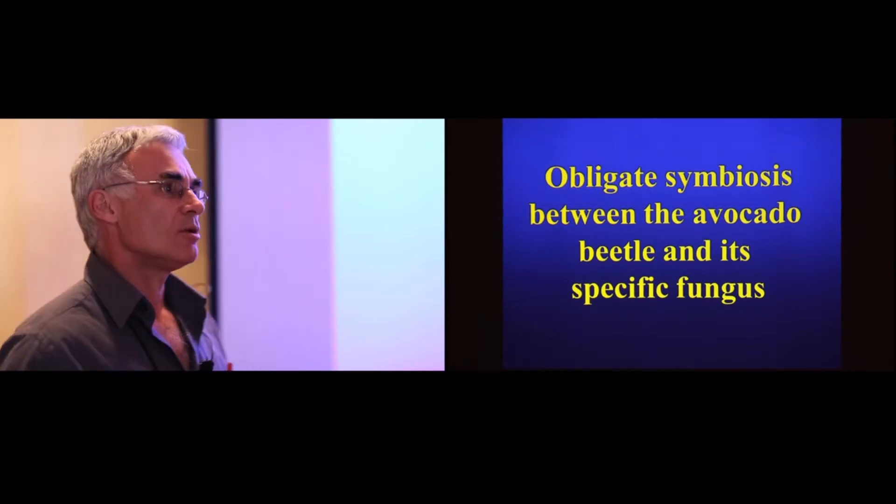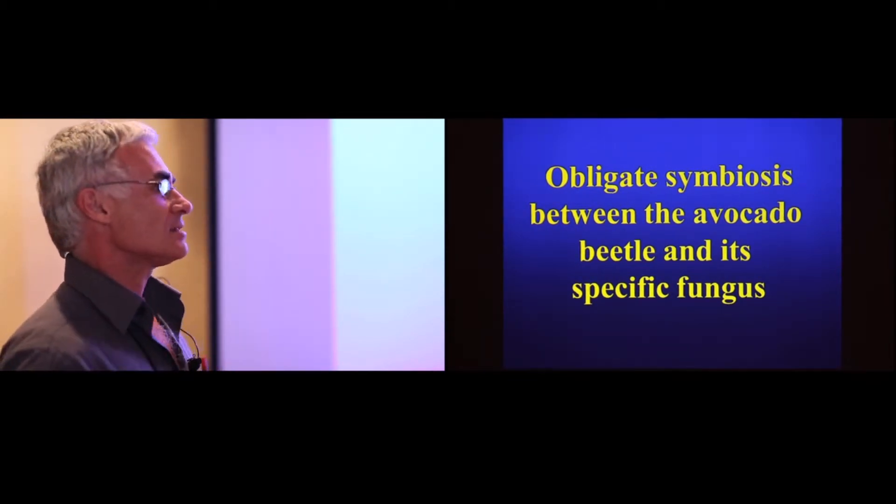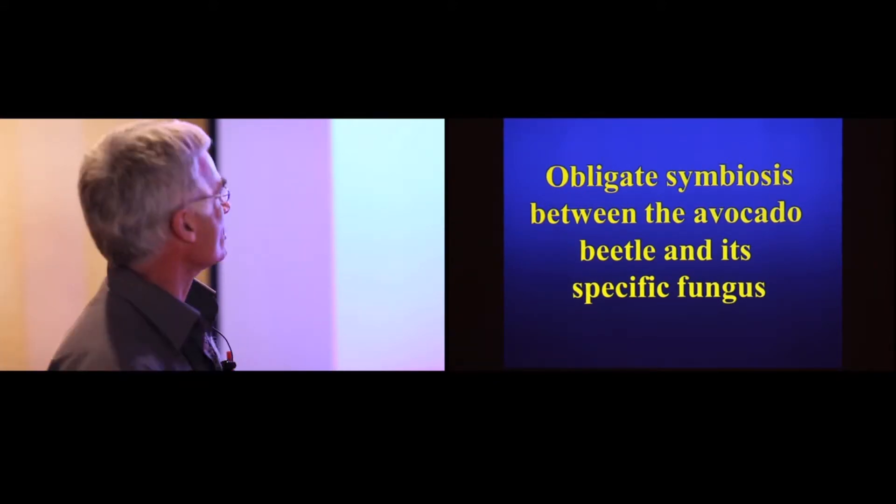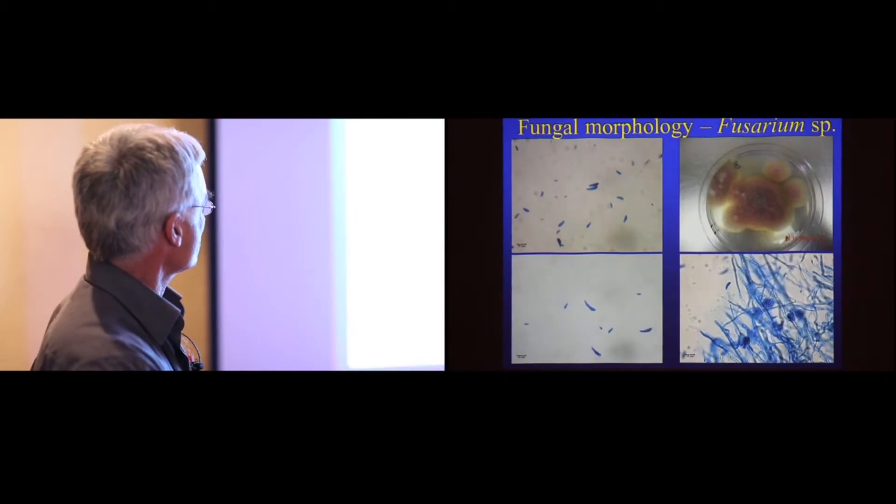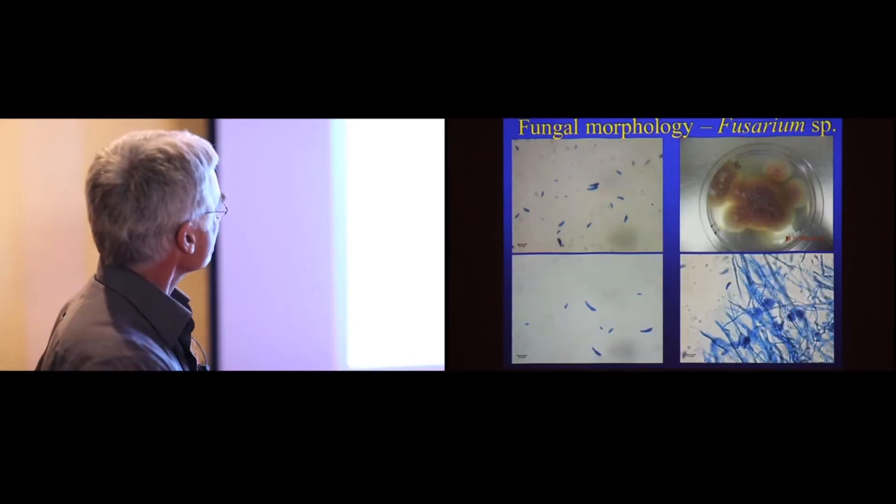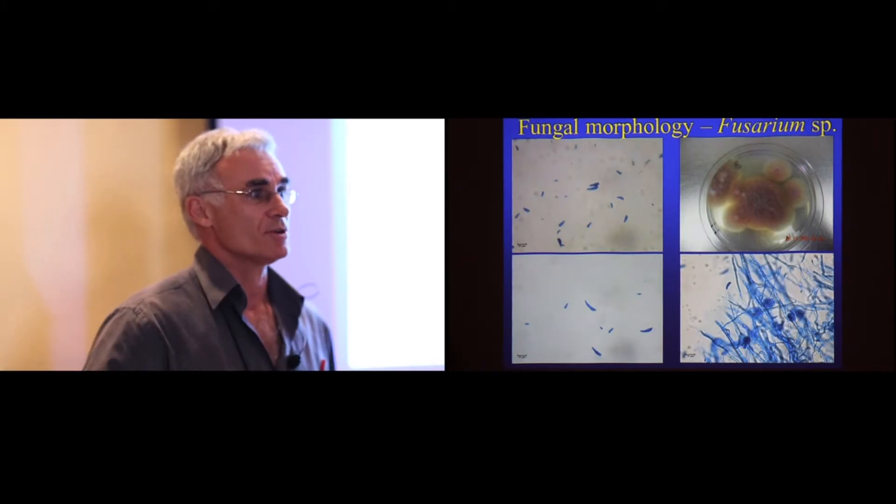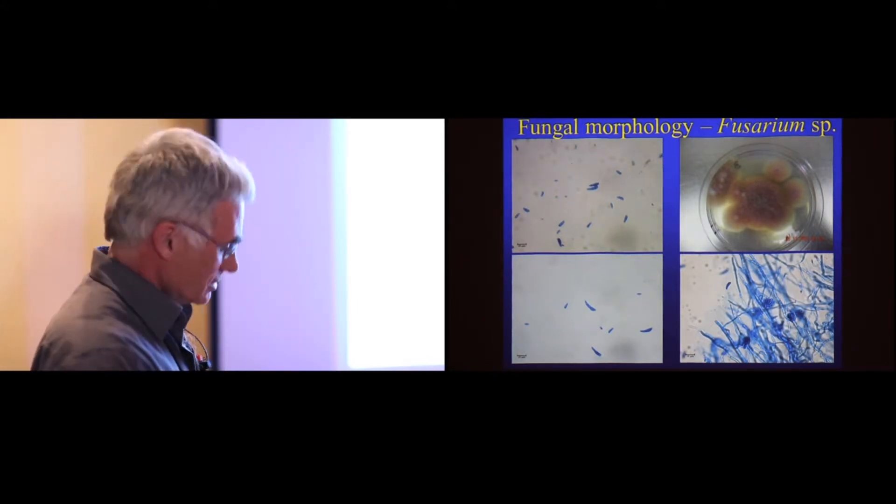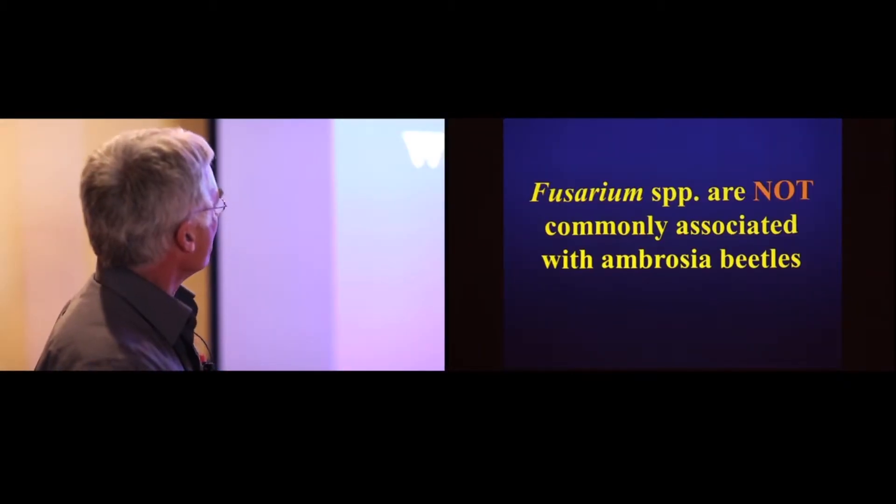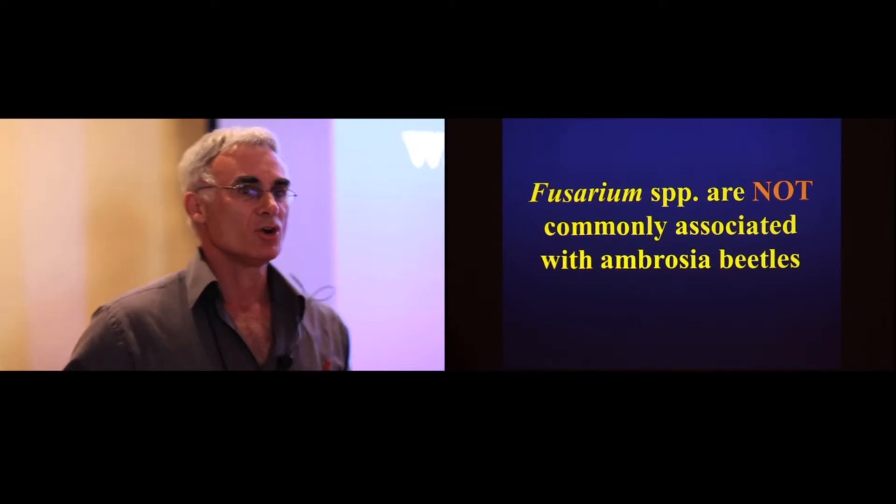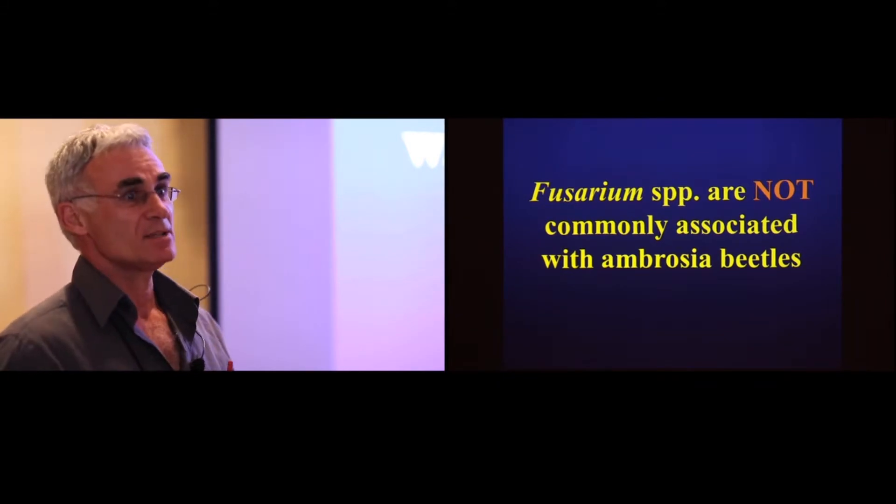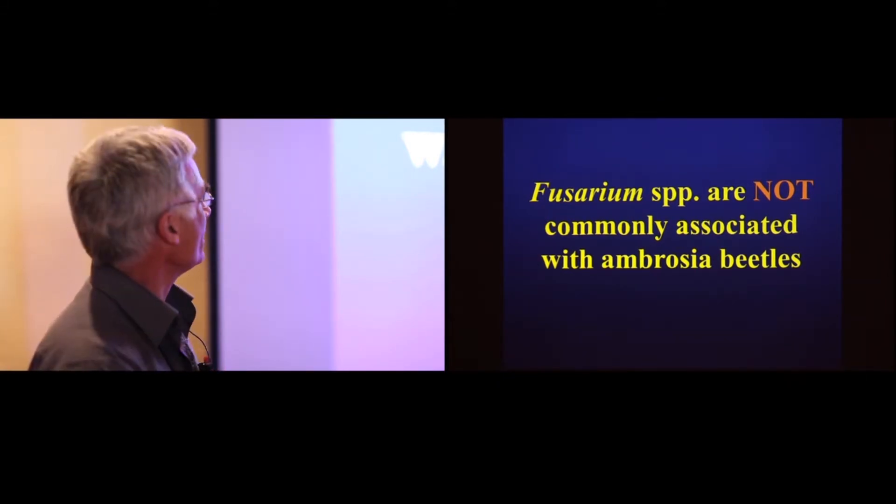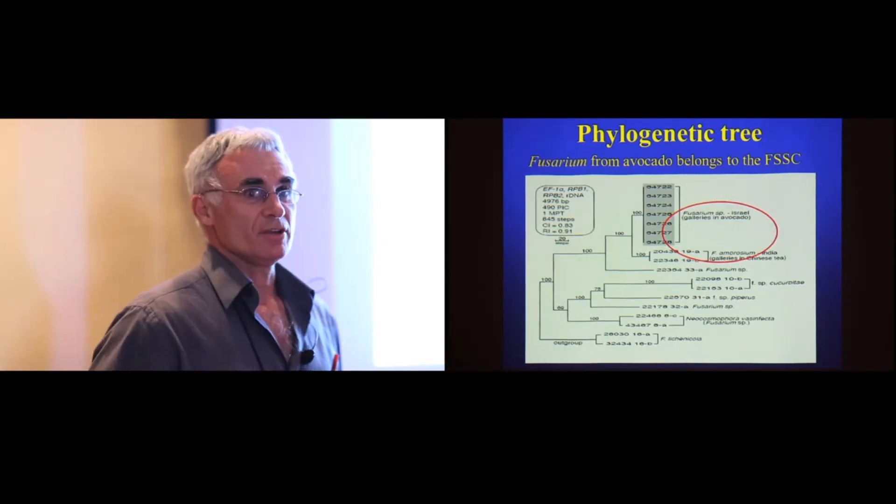Now I'd like to move on to the obligate nature of the fungus-beetle situation that we've encountered. I stress obligate symbiosis because this is the case. When you crush the heads of the beetle, here you see typical spores, typical fungal spores, which are Fusarium spores. And isolated, this is what they look like. I'd just like to stress that Fusarium is not a common symbiont of ambrosia beetles. However, it has been reported.